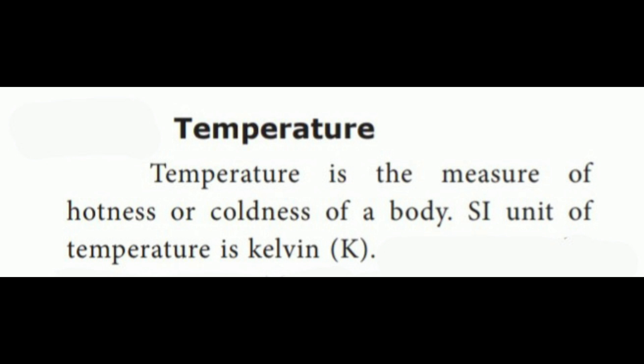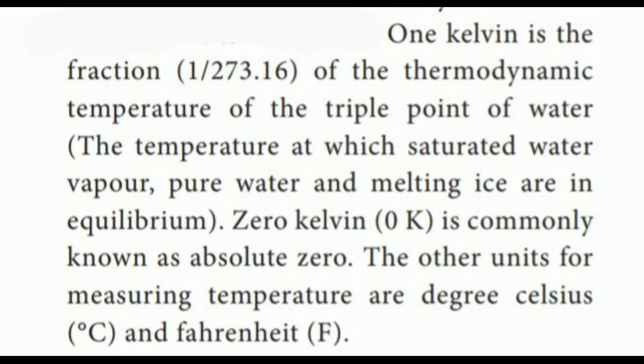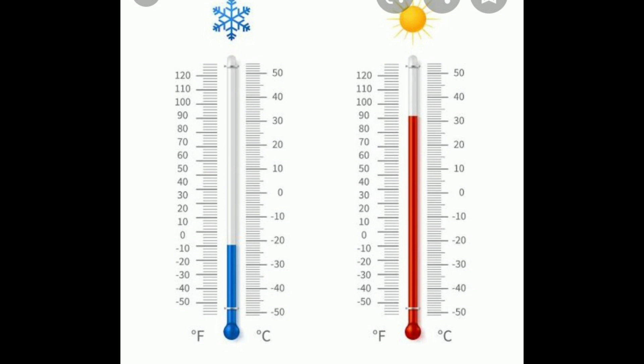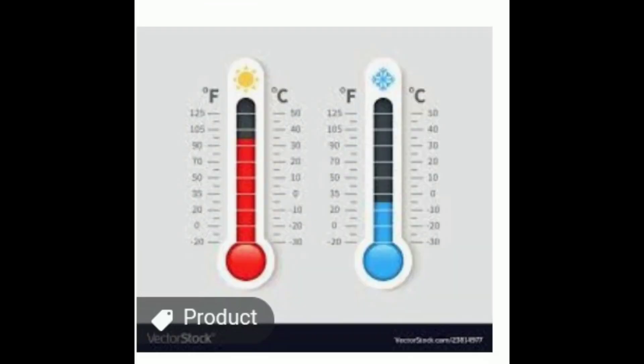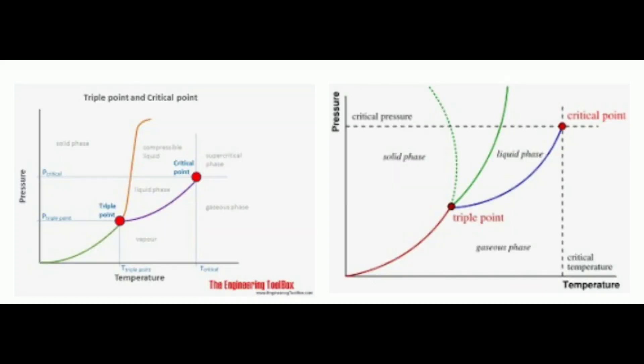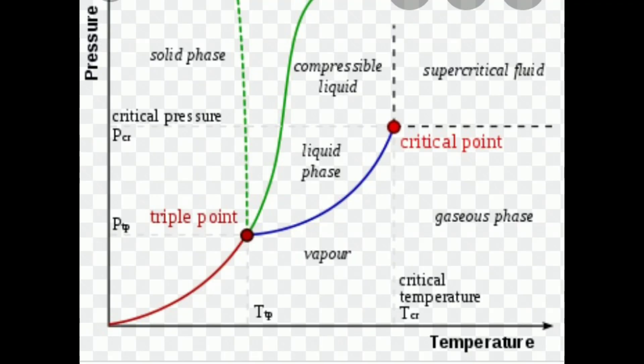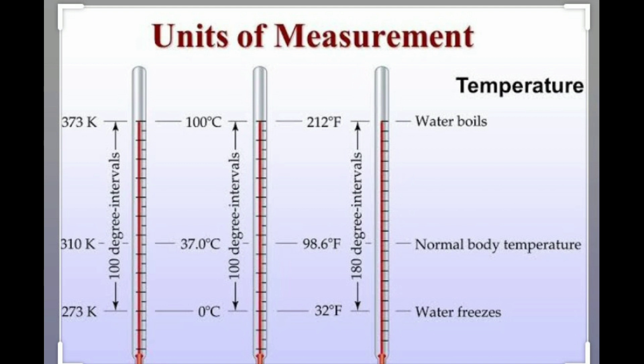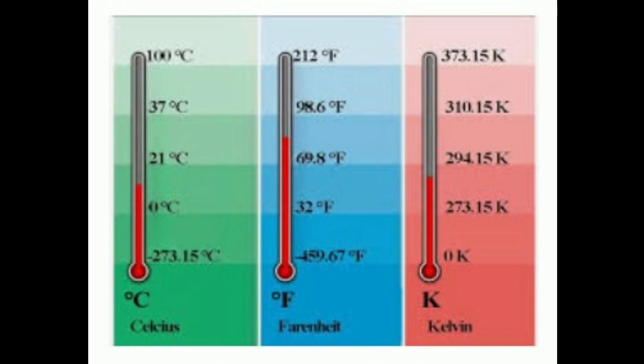SI unit of temperature is kelvin, short form capital K. 1 kelvin is the fraction 1/273.16 of thermodynamic temperature of the triple point of water. The temperature at which saturated water vapor, pure water and melting ice are in equilibrium. 0 kelvin is commonly known as absolute zero. The other units for measuring temperature are degree Celsius and Fahrenheit.